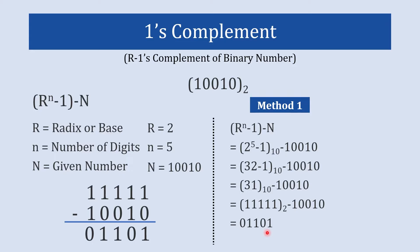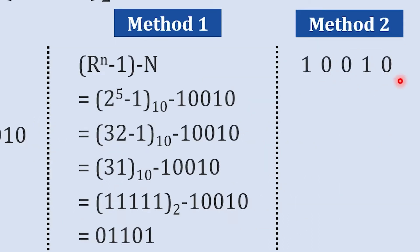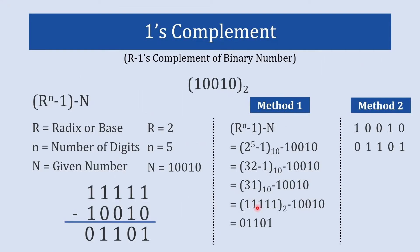Finding 1's complement using method 1 is time-consuming. Method 2 is very simple and requires much less time. To get the 1's complement you just simply put 1's where there is a 0 and put 0's where there is a 1. So we replace all 0's with 1 and all 1's with 0, and we are ready with the 1's complement. This is the actual method — method 1 is the formal approach and method 2 is the shortcut.